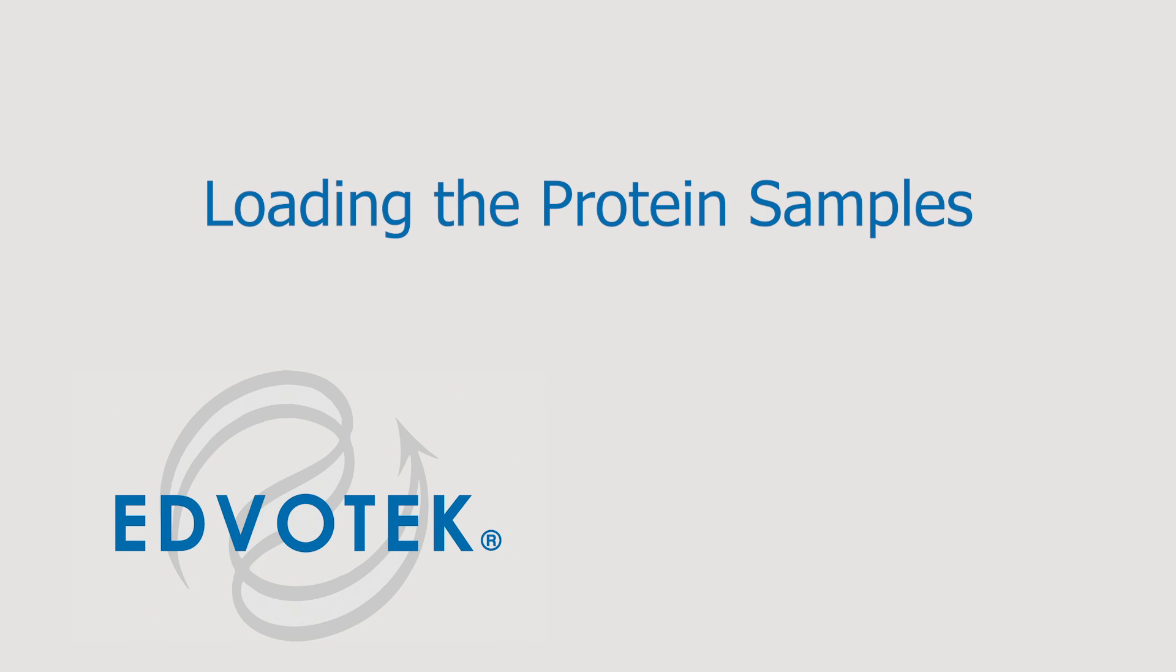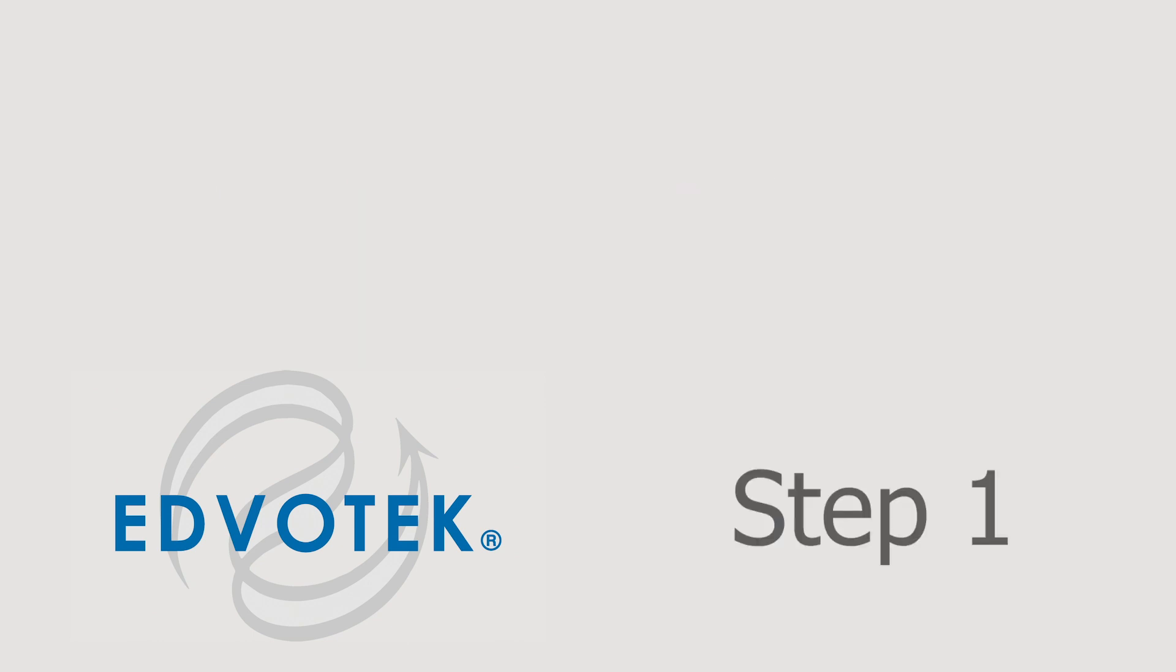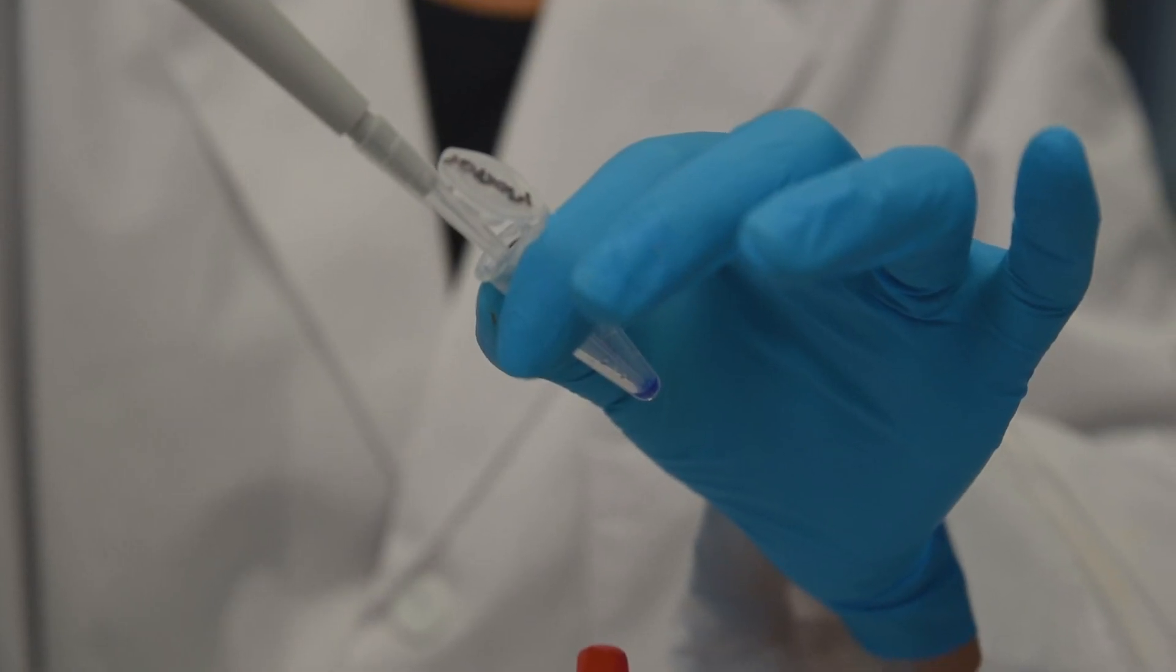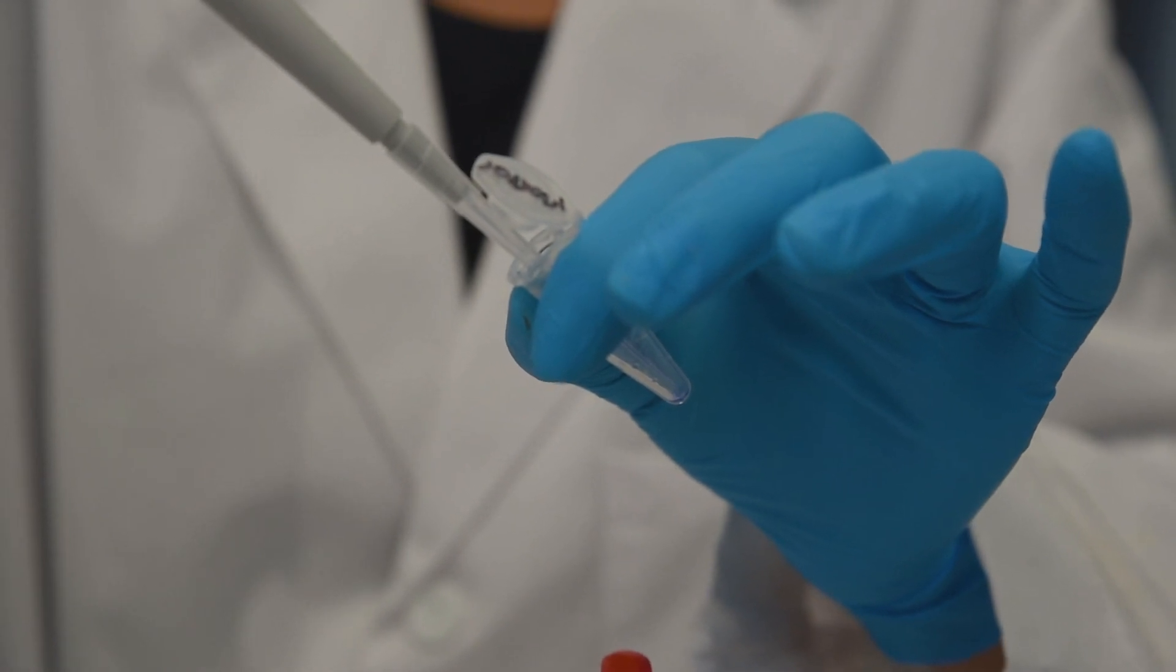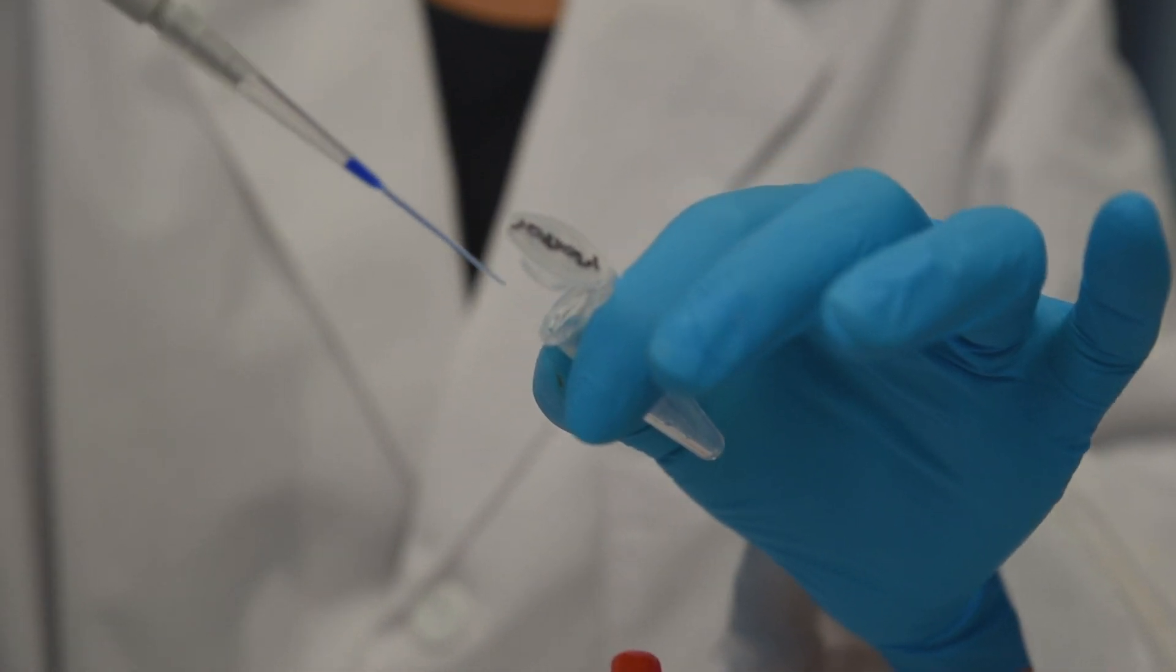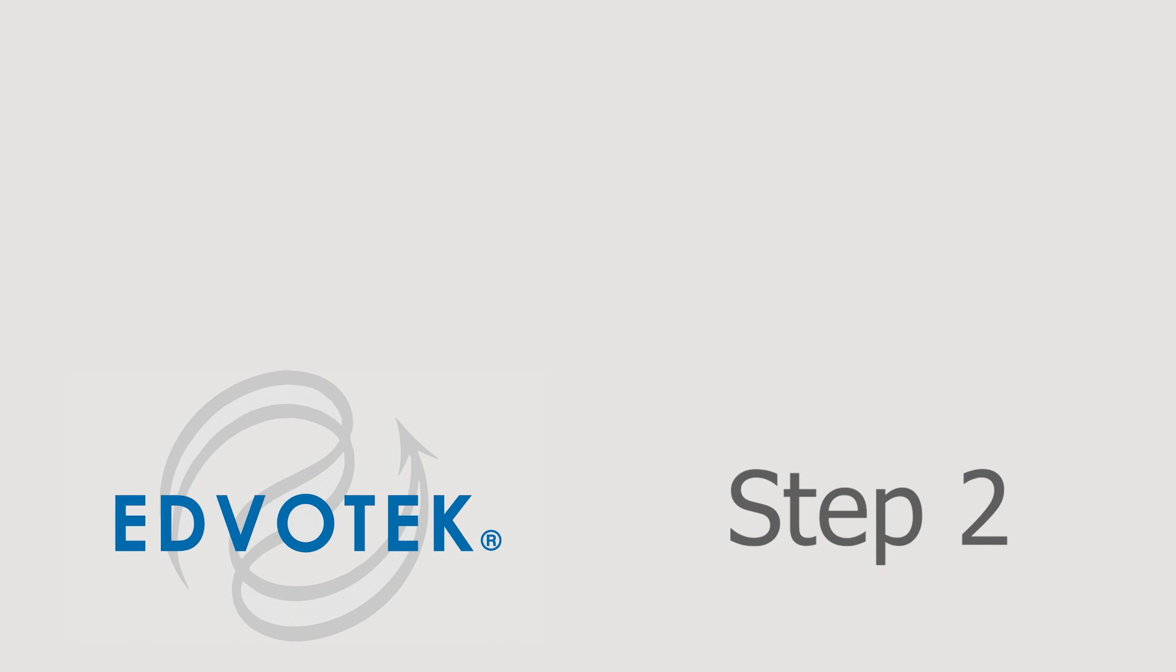Loading the protein samples. Step 1: Using a fine micropipette tip, measure 20 microliters of the first sample or standard protein marker. Step 2: Place the pipette tip under the buffer and directly above the sample well, resting gently against the back plate of the gel cassette.